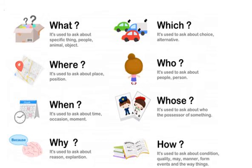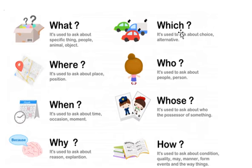You are used to seeing these words in questions, right? But now we're going to see them in sentences, not just in questions. Of course, we'll still use them in questions normally — what's your name, where do you live, when is your birthday, why do you study, who is that person, how are you, whose car is it, which do you prefer, banana or apple? But in this unit, we're going to see these words in sentences.